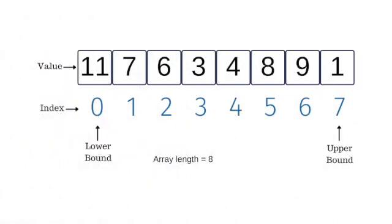Here you can see the example of an array where values are 11, 7, 6, 3, 4, 8, 9, 1. Array index value starts from 0. Array length is 8. First index is lower bound and the last index is upper bound.